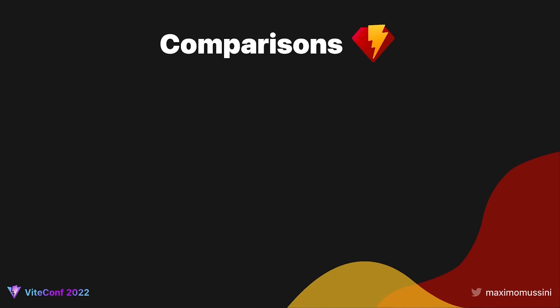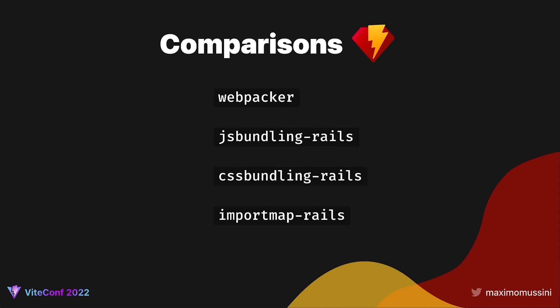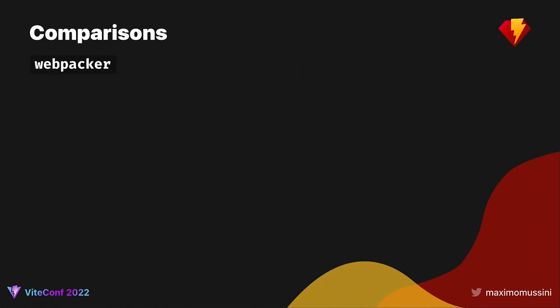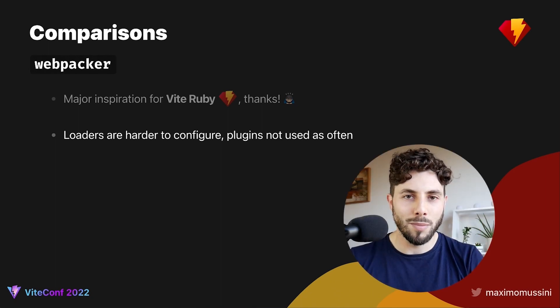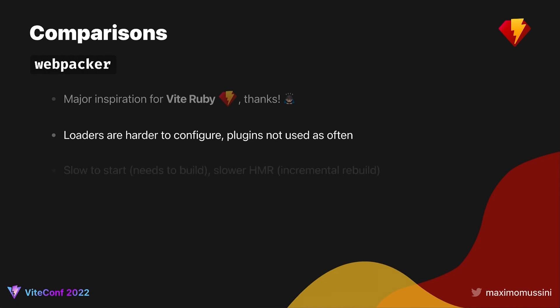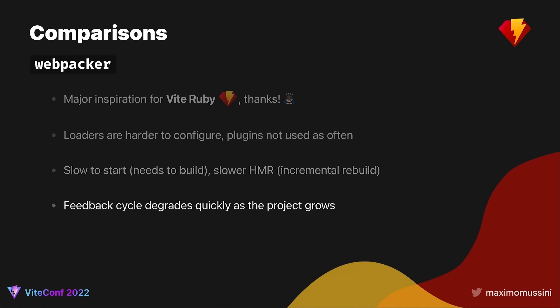So you might be wondering, how does ViteRuby compare to other tools available for Ruby on Rails? You can use Webpacker to achieve a similar integration with Webpack. I used Webpack for many years and it was a major inspiration for ViteRuby, so thanks. Now, Webpack is powerful, but it can be difficult to configure correctly and it takes time to understand it well. Raise your hand if you have seen a Webpack config that made you cringe. In Webpack, cold starts are very slow because it needs to process the entire app, in contrast to the non-blocking Vite server start. HMR is also slower than in Vite, as an incremental rebuild is required on changes. The main problem is that it is proportional to the size of the app and its dependencies. In large projects, cold start can take minutes and HMR can take several seconds, which becomes painful. There are plans to circumvent some of these performance issues, but that just emphasizes how difficult it is to get a good setup.